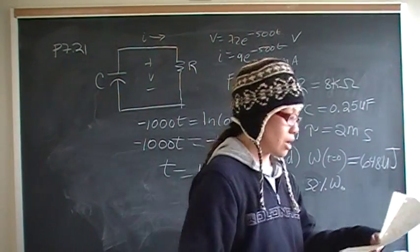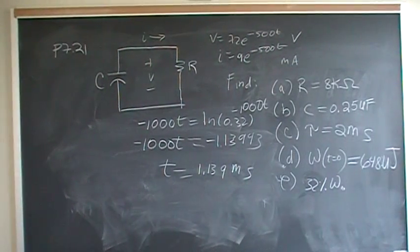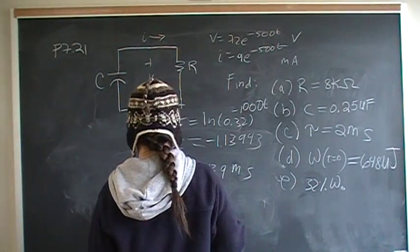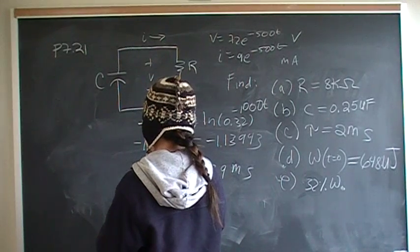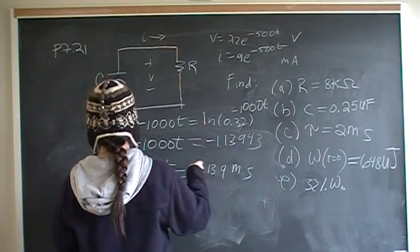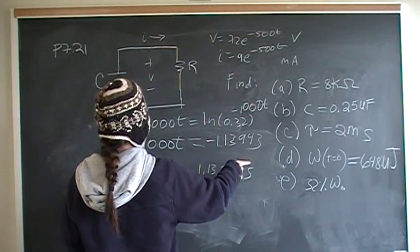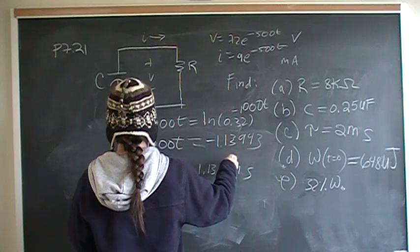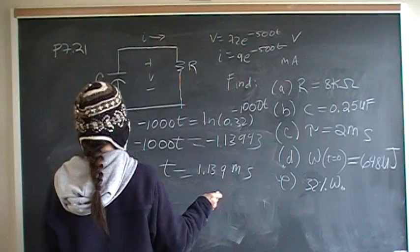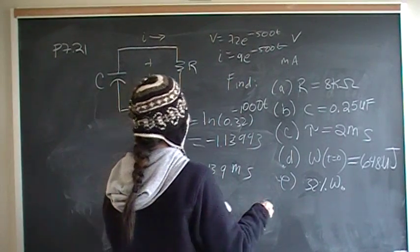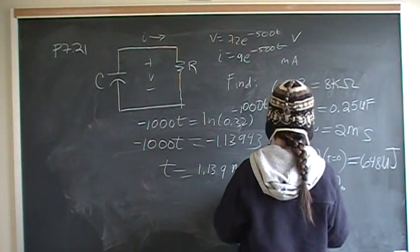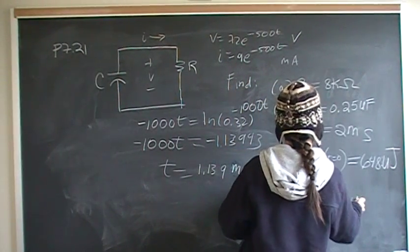I had everything in microjoules, so when you divide through by that, you get the answer, which is 0.001139. And we wanted the answer in microseconds, so the time in microseconds is going to be 1,139 microseconds.